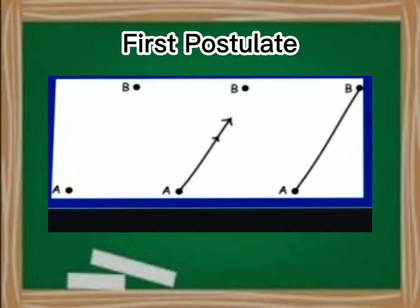First postulate: A straight line may be drawn from any one point to any other point. Some may be stated as an axiom. Given two distinct points, there is a unique line that passes through them.